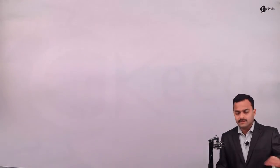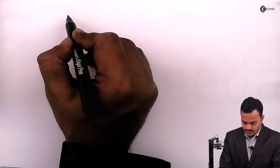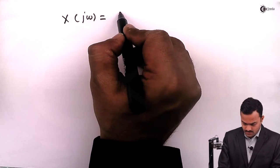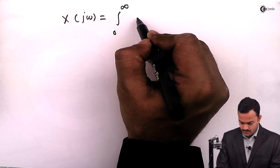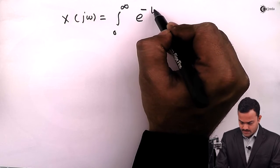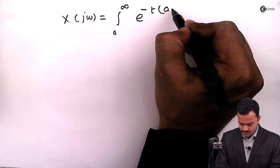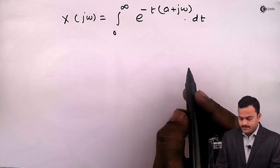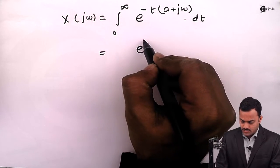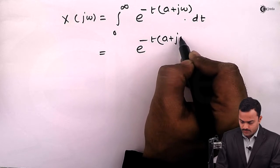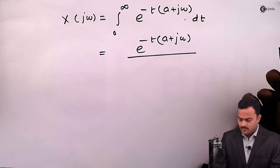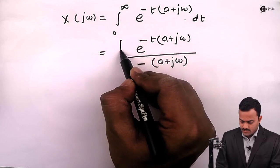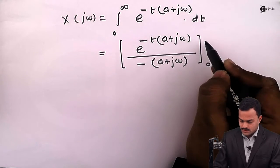Further simplification gives X(jω) as the integral from 0 to infinity of e^(-t(a + jω)) dt. Taking the common factor, we integrate to get e^(-t(a + jω)) divided by minus (a + jω), with limits from 0 to infinity.